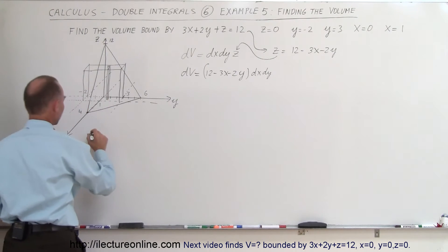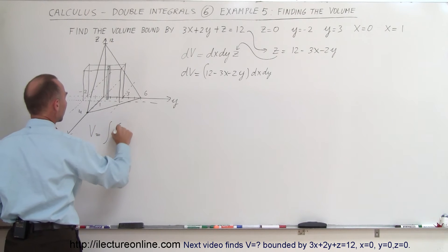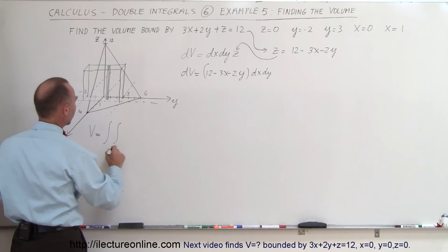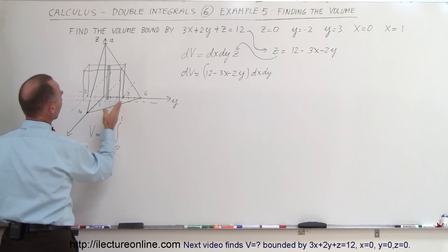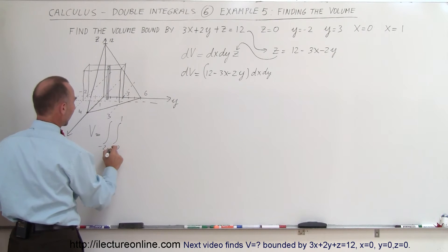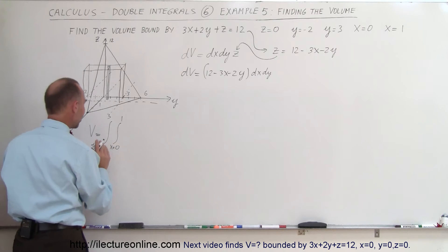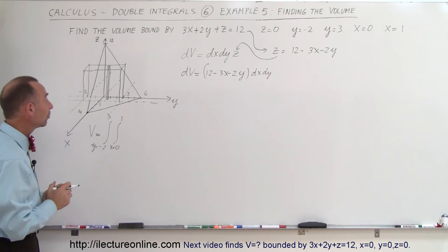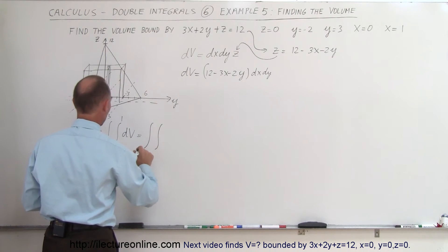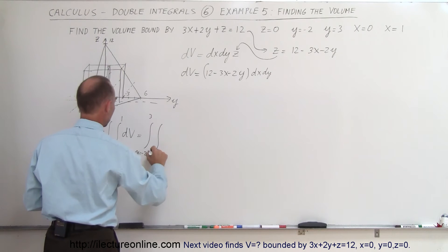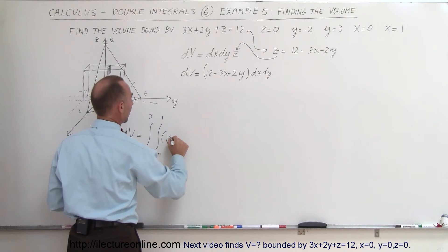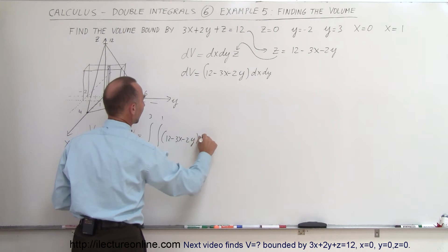The volume equals the double integral where, doing x first, we integrate from x equals 0 to x equals 1, and in the y direction from y equals negative 2 to y equals 3. Plugging in DV, the double integral becomes: integral from y equals negative 2 to 3, x equals 0 to 1, of (12 minus 3x minus 2y) DX DY.